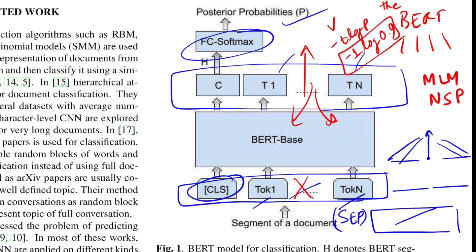The cross-entropy loss is -T log P, where T is the ground truth and P is the predicted probability. If the model predicts 0.9 for the correct word the loss is low; if it predicts 0.1 the loss is relatively higher. These are the two losses L1 and L2 on which the original BERT was trained, although many papers now show NSP hardly matters and MLM alone is sufficient. There are also variations like SpanBERT, which predicts a span of words at a time instead of a single token, giving a performance boost for language representation.